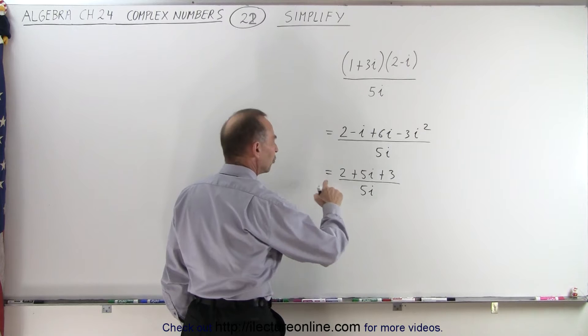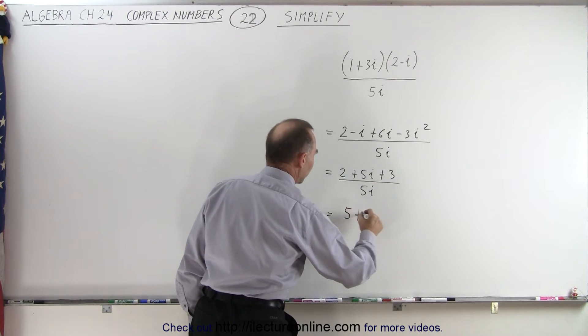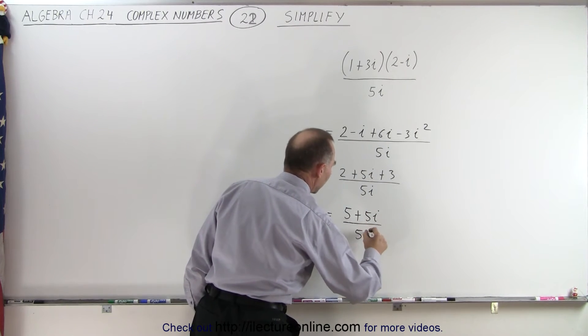And so this can be written as 2 plus 3, which is 5 plus 5i, divided by 5i.